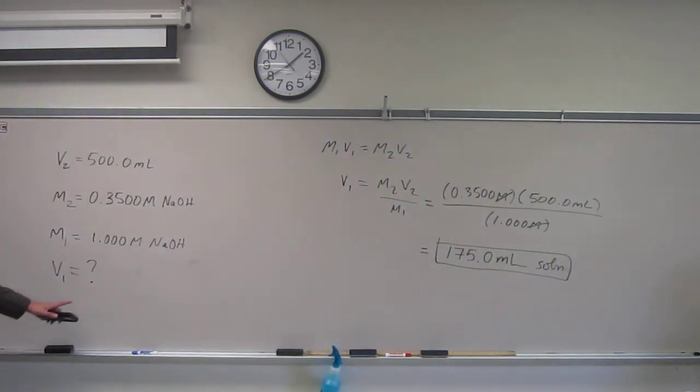So that would be the initial volume that I would need of one molar to dilute to 500 mils to get the concentration of 0.3500 molar.